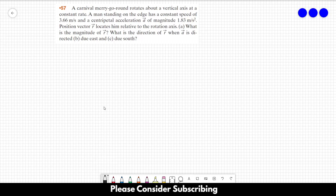Number 57. A carnival merry-go-round rotates about a vertical axis at a constant rate. A man standing on the edge has a constant speed of 3.66 meters per second and a centripetal acceleration of magnitude 1.83 meters per square second.